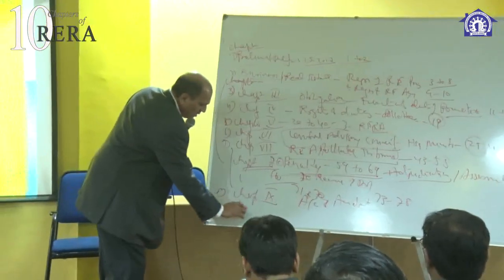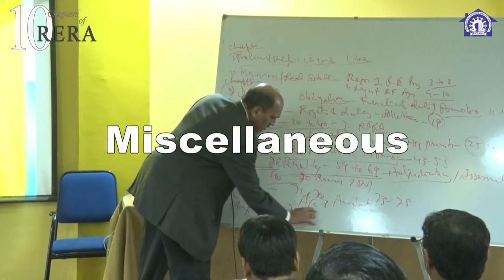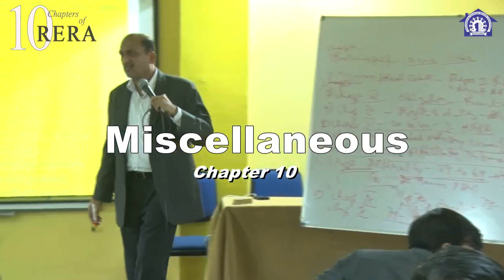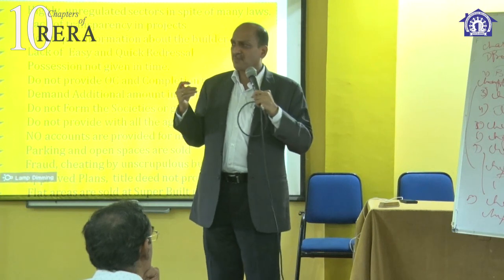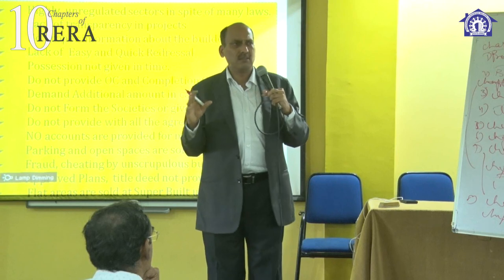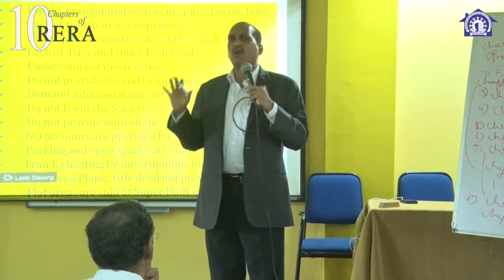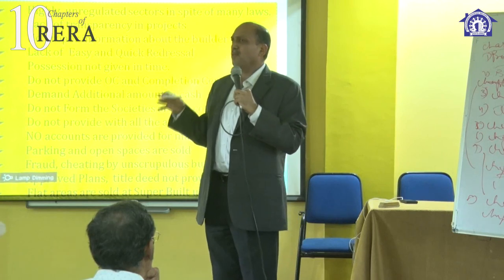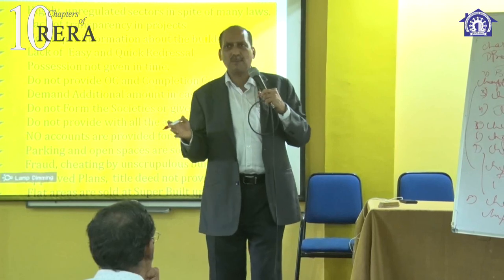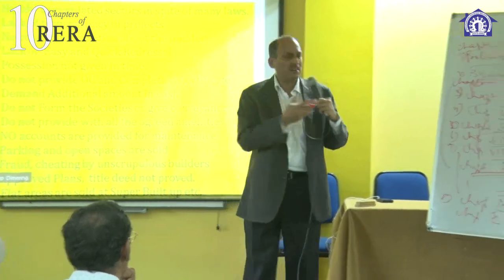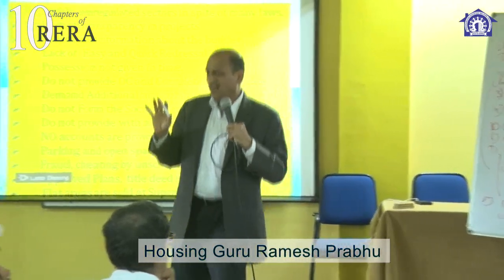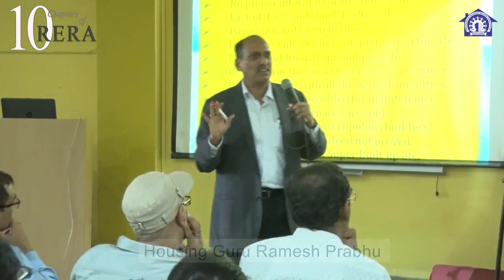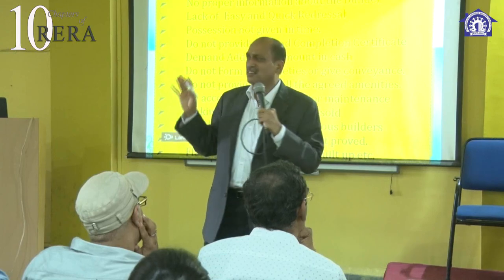Chapter number ten is miscellaneous, which runs from section 79 to 92. It provides that any disputes related to real estate must be taken only to the Real Estate Regulatory Authority — you cannot go to the civil court. Even for criminal matters, it must go through the real estate regulatory authority. There is a bar of civil court, and provisions on delegation of powers and overriding effect. The entire act — section 1 to section 92 — is divided into 10 chapters, covering real estate project registration and real estate broker registration.